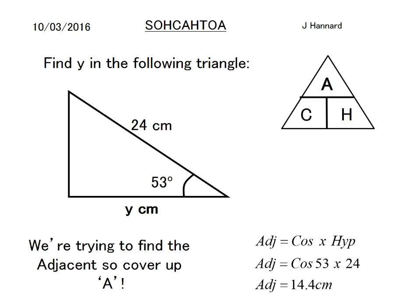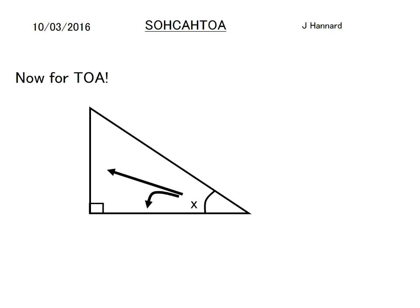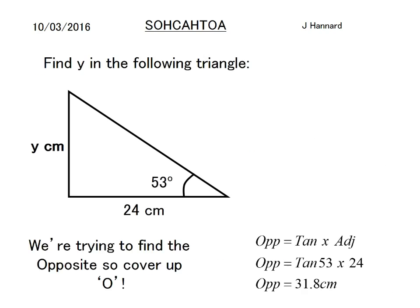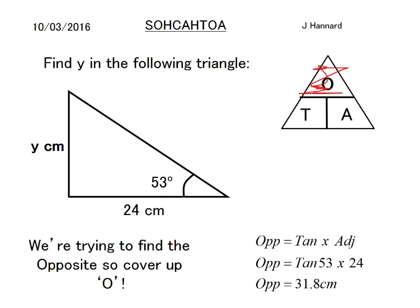In this case we would be covering up the adjacent part, so it would be cosine times hypotenuse. And for TOA — we want to work out the opposite, so we cover up the opposite and it would be tan times the adjacent. So opposite equals tan × adjacent, which is tan 53° × 24, giving 31.8 cm.